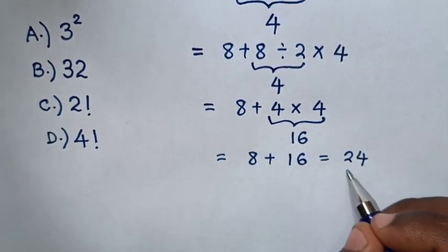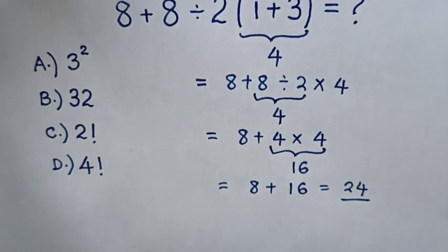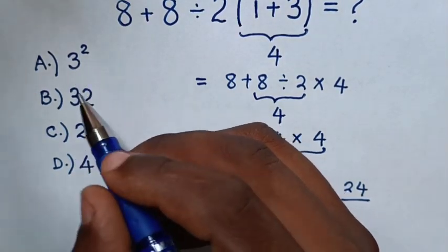So, this is our final answer. Whereas, to selecting the multiple choice, A, 3 square, this is 9, is wrong.